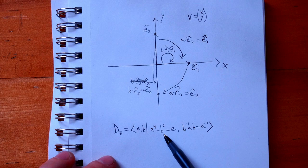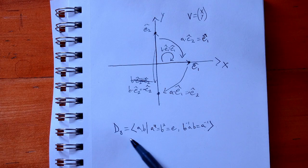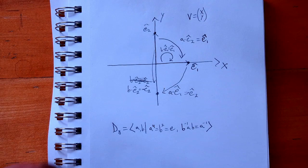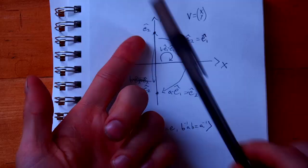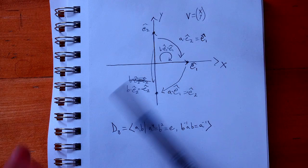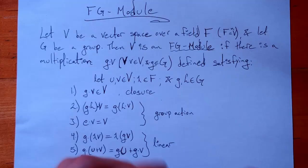So this FG module takes vectors in R² and maps them based on the symmetries of D8 — just as we would expect. The question is: how can we use this to learn more information about D8? That's coming up. I'm going to give more examples of FG modules, talk about equivalent representations and how those affect FG modules, and discuss permutation modules. Then we'll look at how FG modules tell us more about our groups — which is ultimately the point of representation theory. If you found this video helpful, please like and subscribe, and I'll see you in the next video.